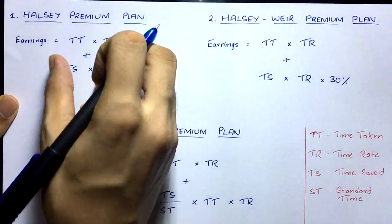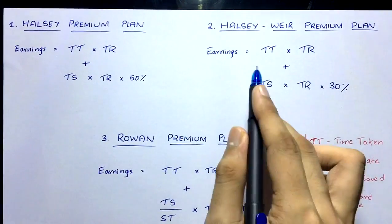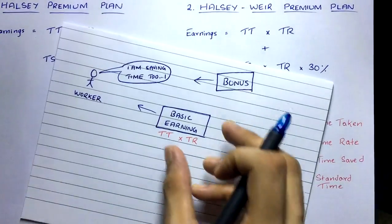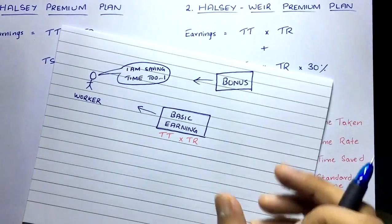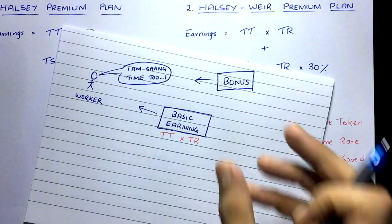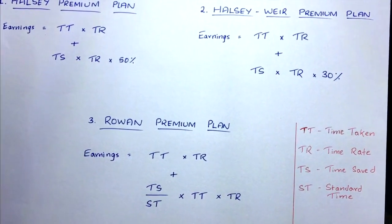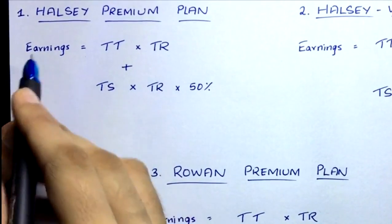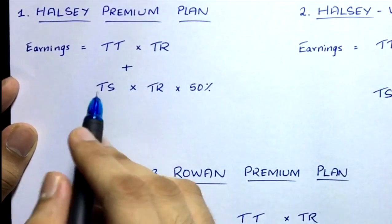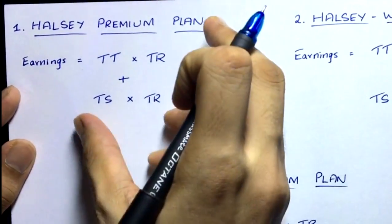In each of these plans you will see the component TT × TR — time taken multiplied by time rate — which is the basic earning. The basic earning remains the same across all plans, but depending on which bonus plan the company uses, the bonus part will differ. In the Halsey Premium Plan: Earnings = (Time Taken × Time Rate) + (Time Saved × Time Rate × 50%).